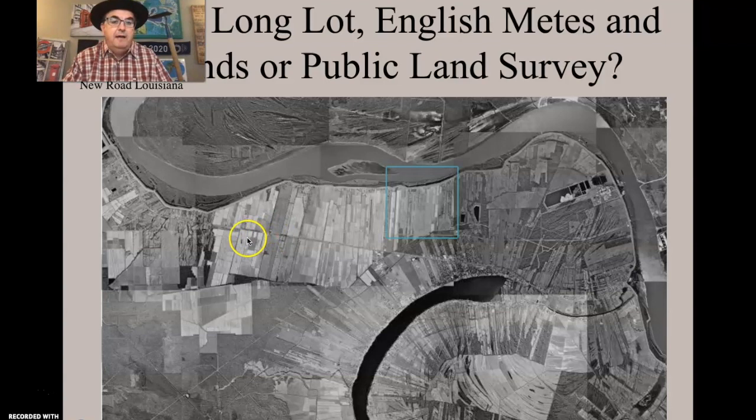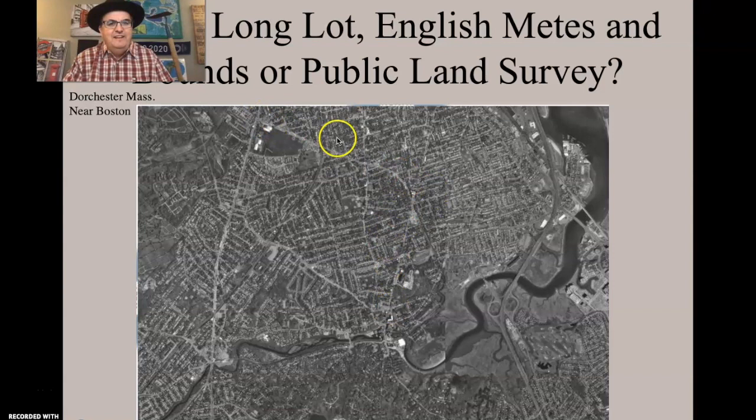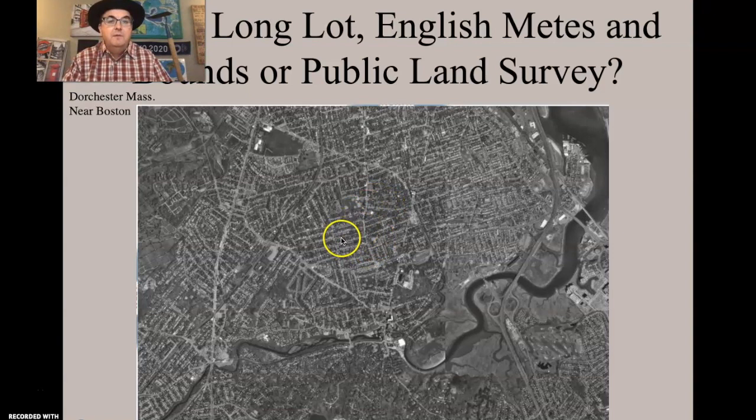The third type is metes and bounds, one of the older systems, designed by the English. This is Boston or outside of Boston, and you can see the roads just go the shortest distance — it's not really a grid. They go from point A to point B because at the time you would just walk or take a horse, so a grid pattern didn't matter as much. It follows the natural landscape. This is what the metes and bounds system looks like from a satellite image.